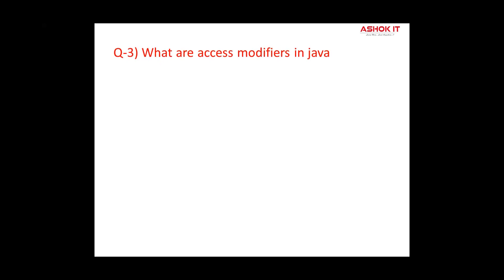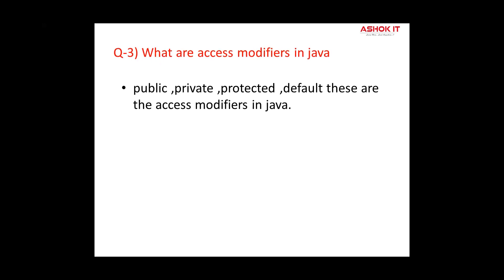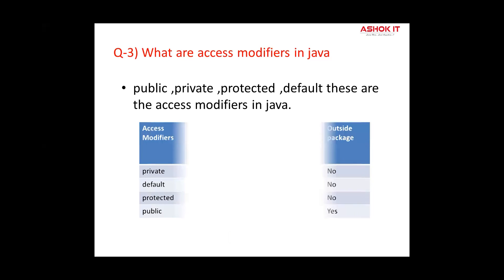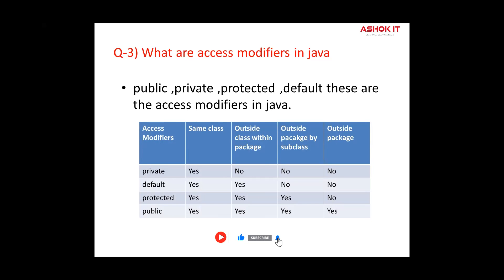Question three: What are access modifiers in Java? There are four access modifiers in Java: public, private, protected, and default. You can refer to the table for more information. Private — the access level is only within the class; it cannot be accessed from outside the class. Default — access is only within the package; if you do not specify any access level, it will be default. Protected — access is within the package and outside the package through a child class. Public — the access level is everywhere: within the class, outside the class, within the package, and outside the package.